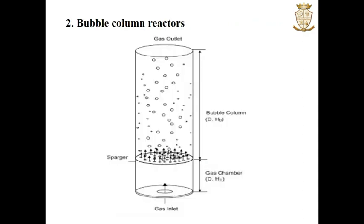The next type is bubble column reactors. This is also a cylindrical vessel having an aspect ratio of 4 to 6. Air or gas is introduced at the base or bottom of the fermenter through a sparger. The sparger may be either a perforated pipe or a perforated plate. The introduction of air through this bottom area aids in the aeration of the fermenter as well as in the mixing of the contents.